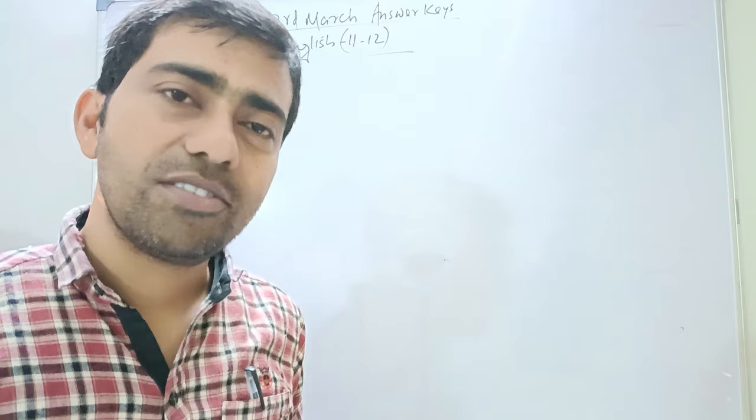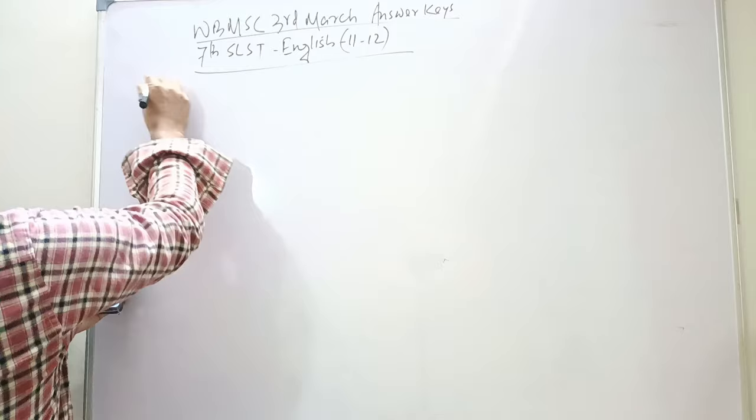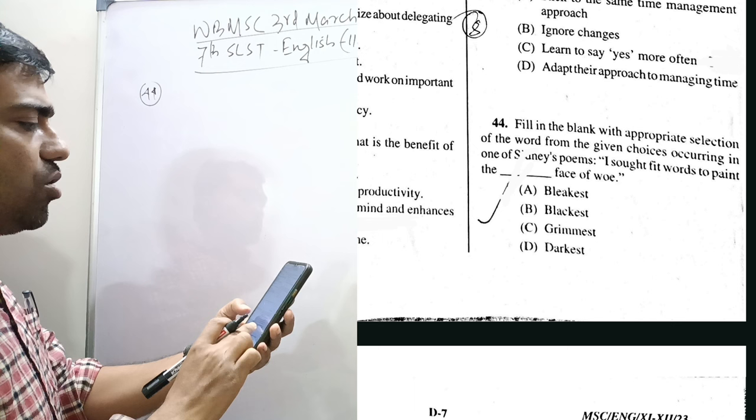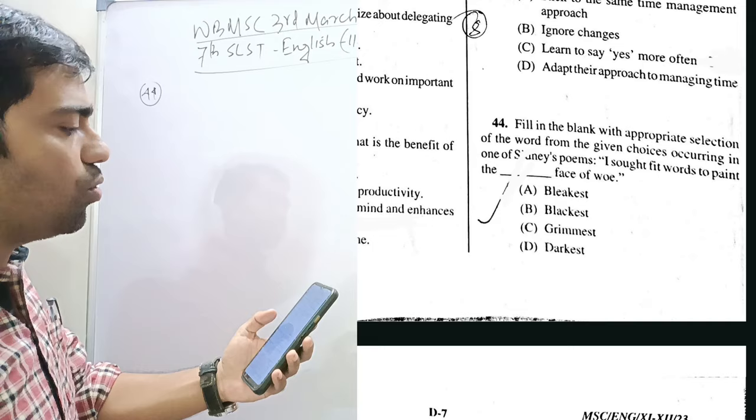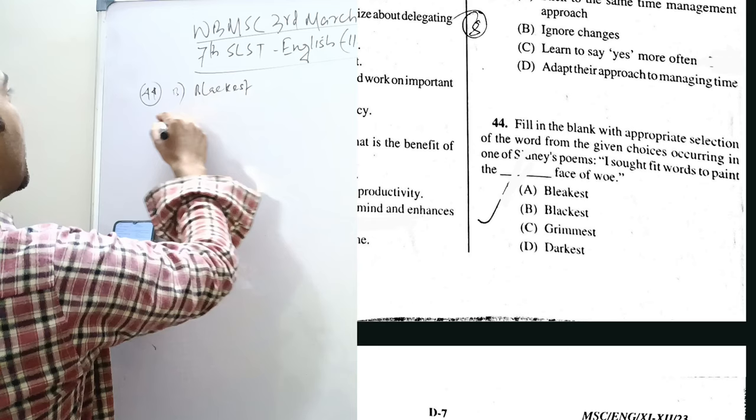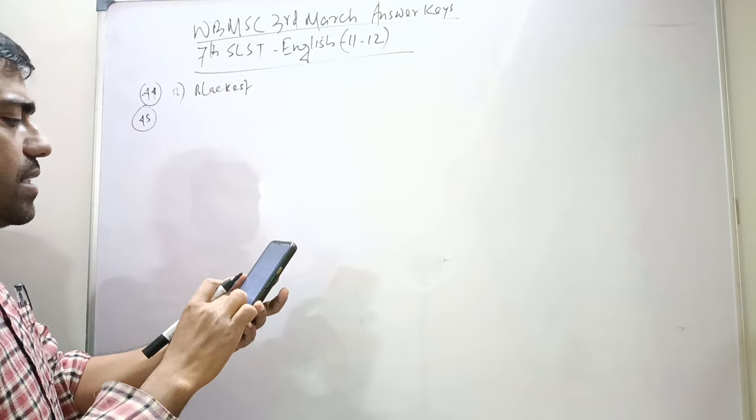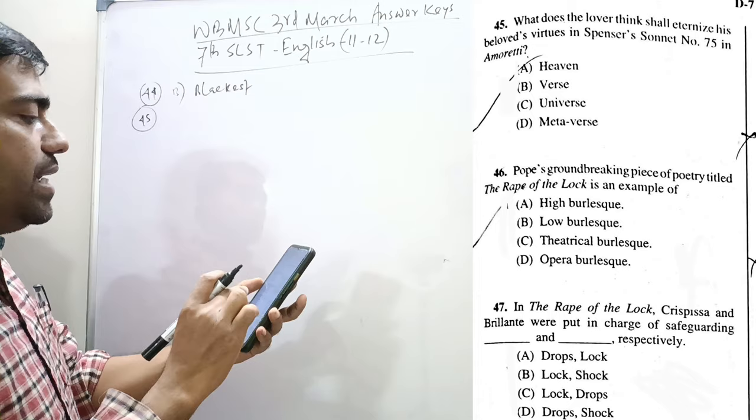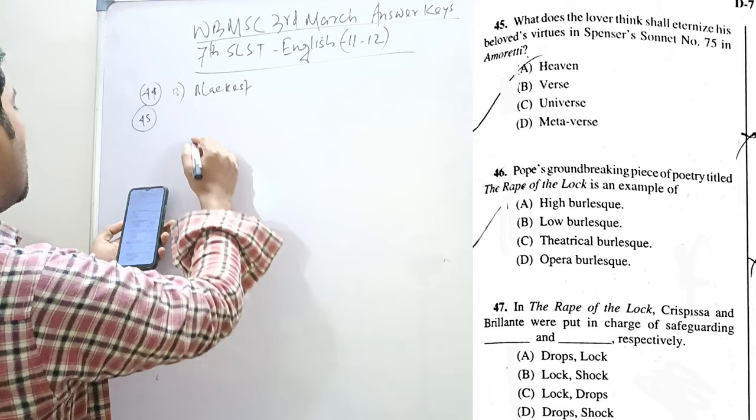So, next is 44. Fill in the blanks with appropriate selection of the word from the given choices occurring in one of Spenser's poems. So, what does the lover think shall eternalize his beloved virtue of Spenser's sonnet number 75 in Amoretti? So, 75 sonnet is the verse, so it is verse in Amoretti.